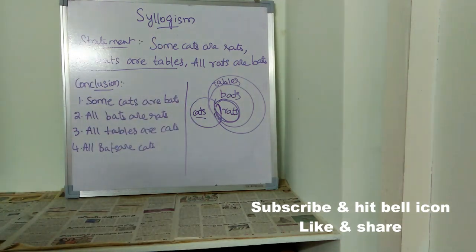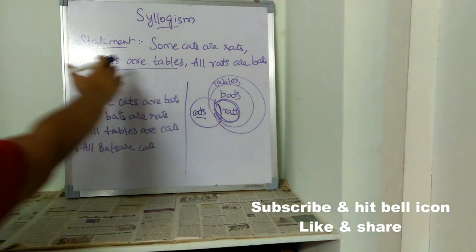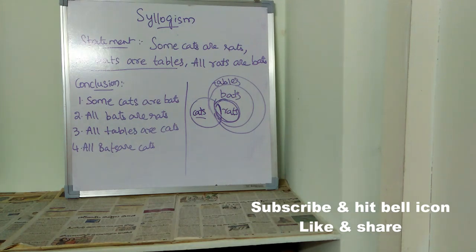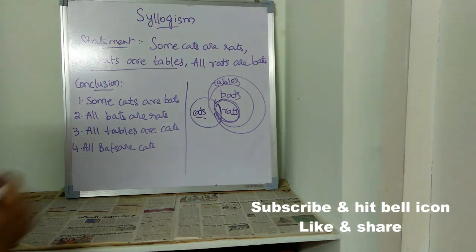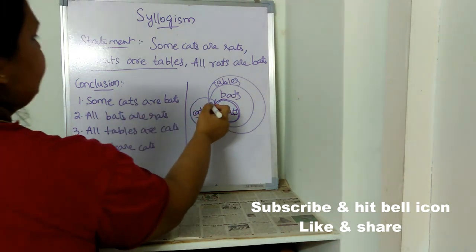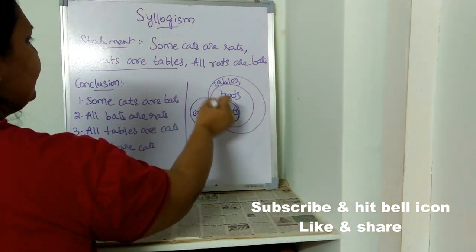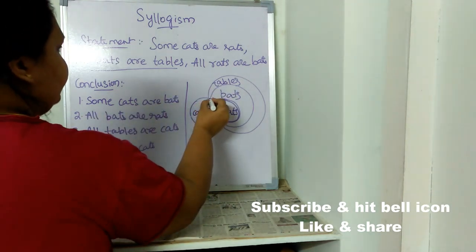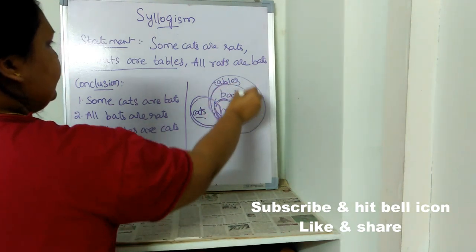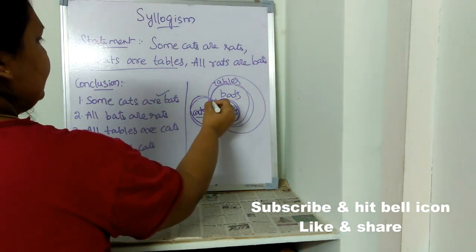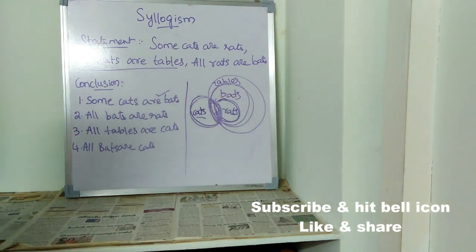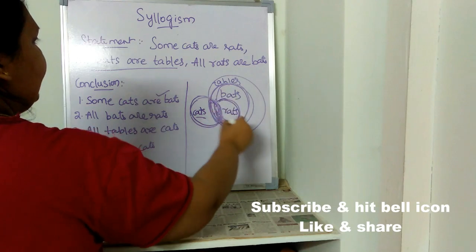Now let's look at the given conclusions and see which is correct. This pictographical diagram is used to verify whether the given conclusions are correct or not. Conclusion one: some cats are bats. Looking at the diagram, is there a common point between cats and bats? Yes — this is cats, this is bats, there is a common point, so this conclusion is correct.